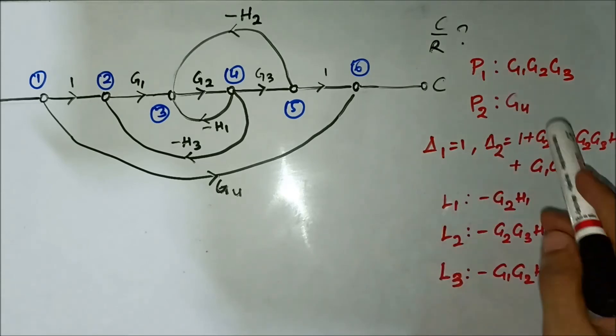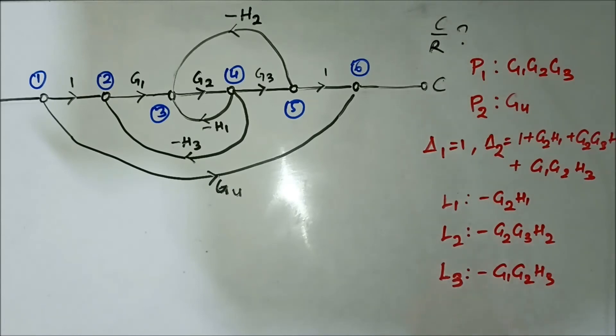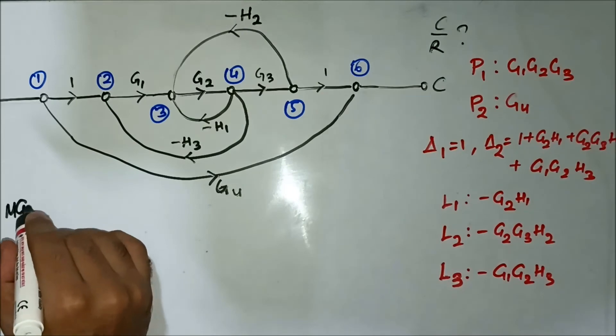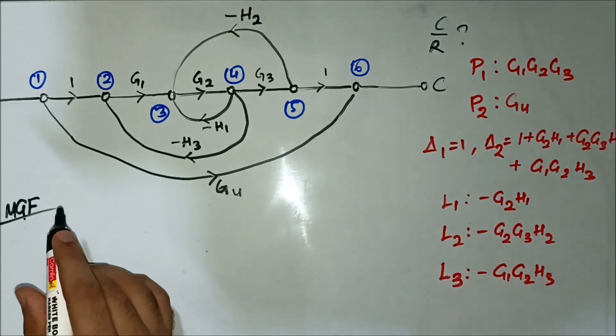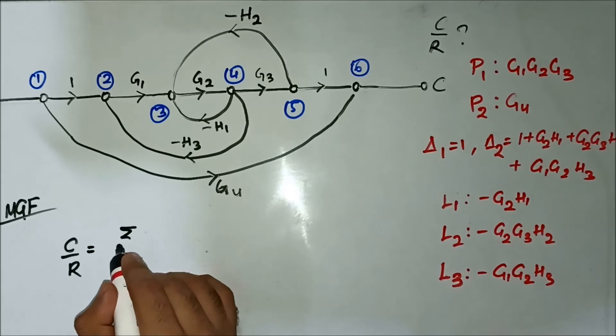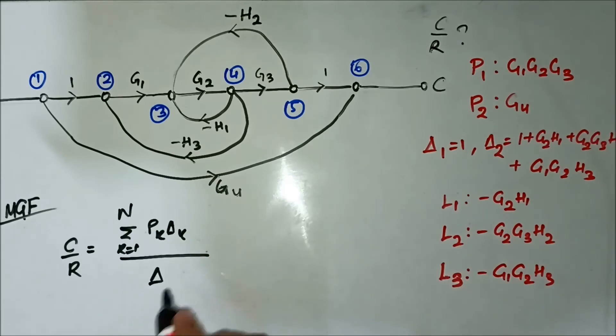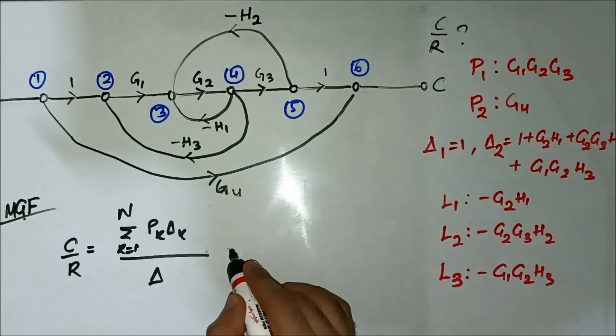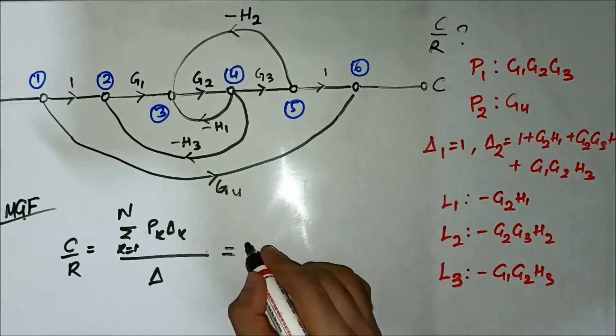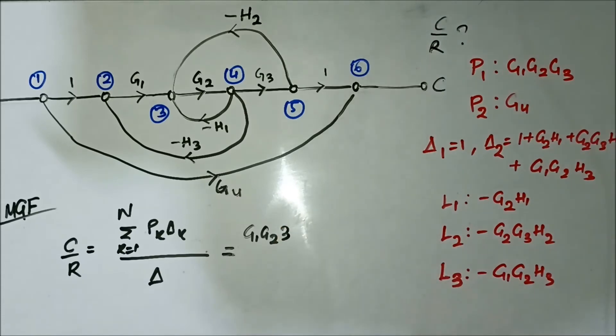So we have found out all the parameters required for Mason's gain formula. As per Mason's gain formula, the transfer function is given by the summation of the products of the forward path gains times path factors divided by the graph determinant Δ. So here we will substitute the values.